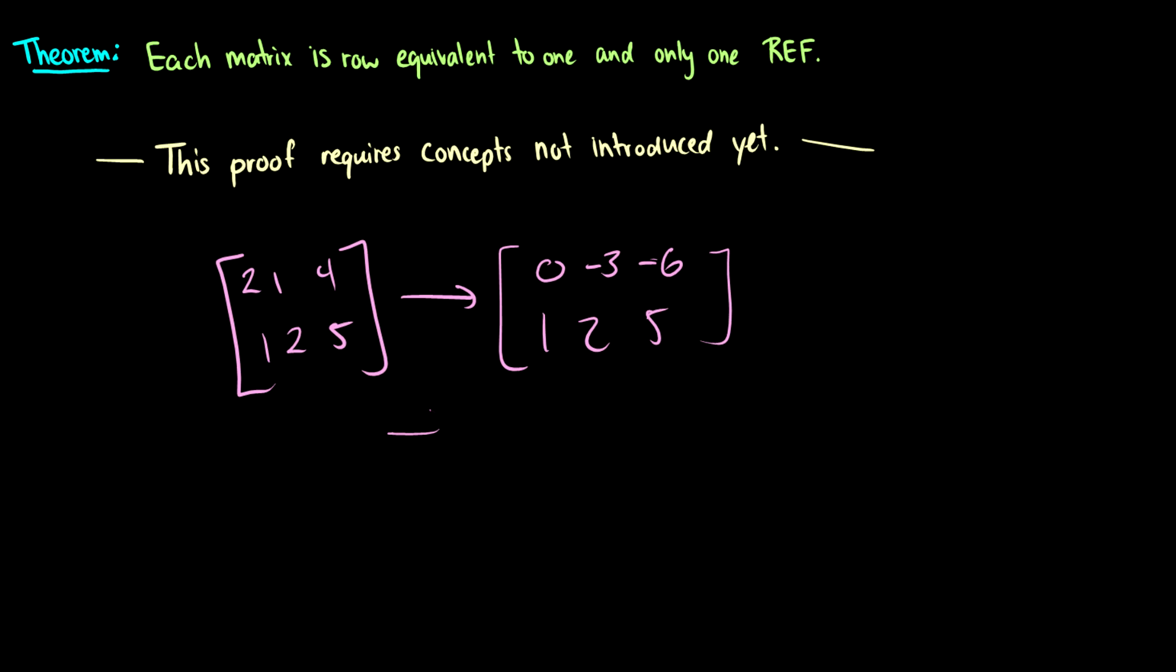We can reduce this further by switching the rows to get 1, 2, 5, and then multiply the first row by negative a third so we get 0, 1, 2. Now we subtract 2 of the second row from the first row, so we have 1, 0, 1 and 0, 1, 2.